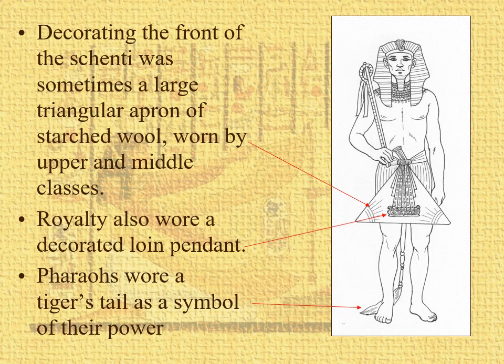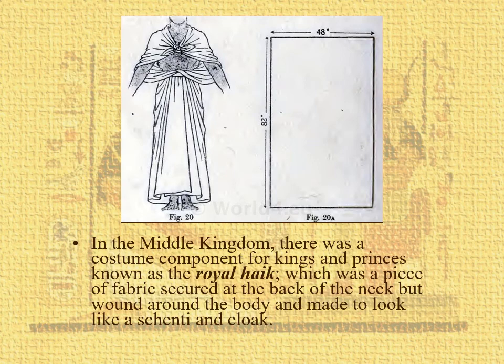Sometimes, if you're royalty or a big shot, you'd have this triangular starched apron made of wool or linen. And this thing right here — that's a loin pendant, usually decorated. If you're a pharaoh, you're going to have a tiger's tail, which transfers the tiger's power to you. Also in the Middle Kingdom, you see this sort of royal robe called the royal hake — a piece of sheer linen attached to the back of the neck, wound around the body and made to look like a shinti or cloak. It'll go around the body, come back, and tuck in — all one piece.